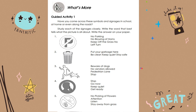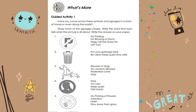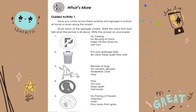For number 1, what is this signage all about? Is it no parking, no blowing of horns, keep off the grass, or no left turn? Number 2, what is this picture all about? Put your garbage here, be clean, keep quiet, or stay safe? Number 3, what is this picture all about? Beware of dogs, no vendors allowed, pedestrian lane, or stop? How about signage number 4? Is it stop, go now, keep quiet, or get ready? And number 5, what is this signage all about? Is it no picking of flowers, attention, listen, or stay away from grass?